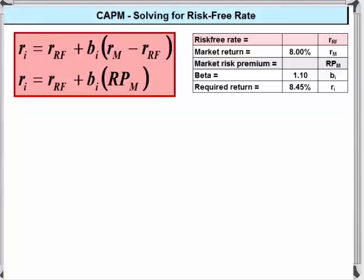So substituting the values in, we get 8.45 is equal to the risk free rate plus 1.10 times the return on the market minus the risk free rate.